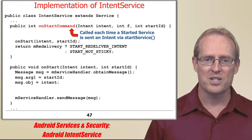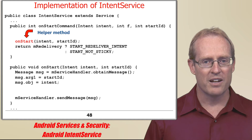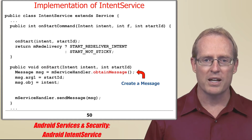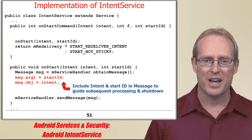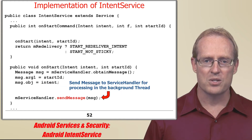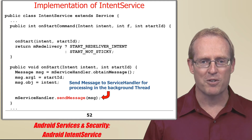Each time an intent is sent to the intent service by the startService method, the Android service framework invokes its onStartCommand hook method, which in turn invokes the onStart helper method that forwards the intent to the service handler by creating a message containing the intent and the start ID to guide subsequent processing and shutdown behavior. Finally, onStart calls the service handler's sendMessage method to pass the intent and start ID to the background handler thread using the handler framework.